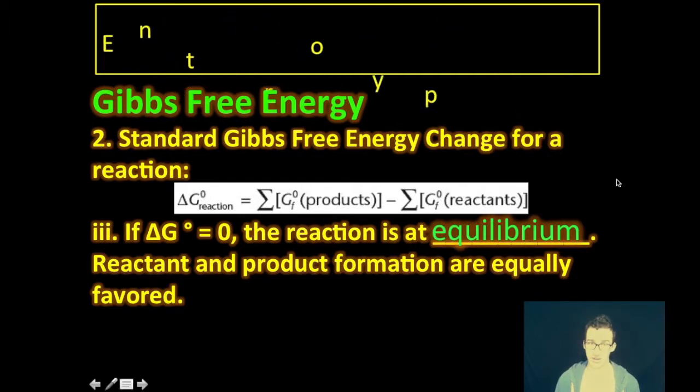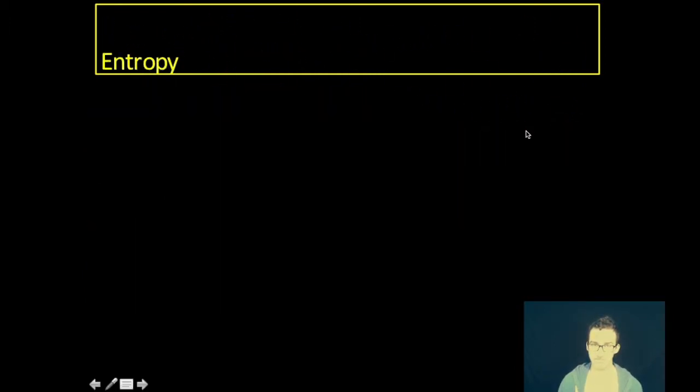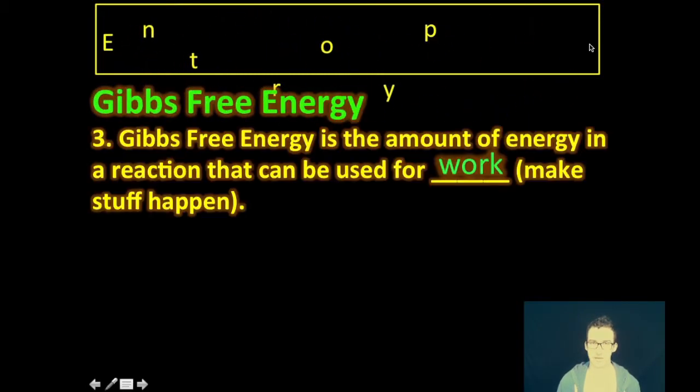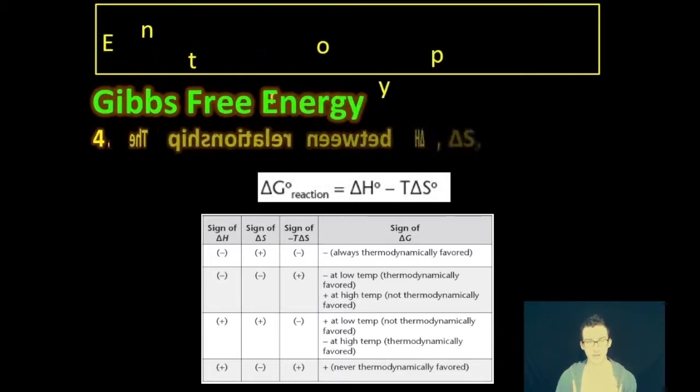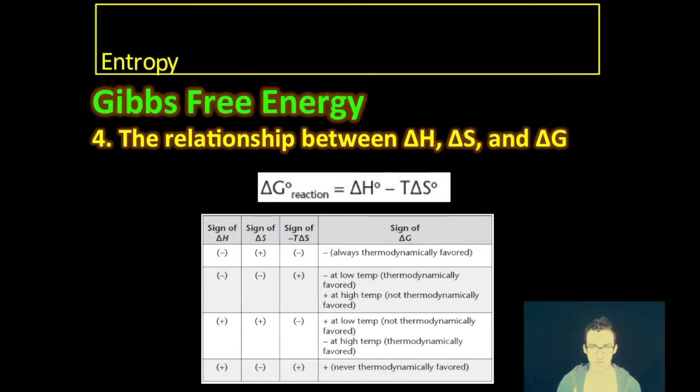However, if you calculate a Gibbs free energy change that is equal to zero, it implies the reaction is at equilibrium where neither reactant nor product formation is favored. And basically, our understanding of Gibbs free energy is simply the energy in a reaction that can be used for work that can make stuff happen. And ultimately, as provided on your formula chart, we have a relationship between all of these quantities. Again, we are thinking about the enthalpy change delta H and the entropy change delta S and what that tells us in terms of whether or not the reaction will proceed.